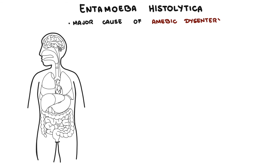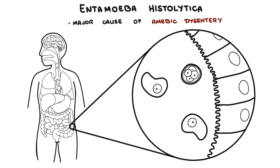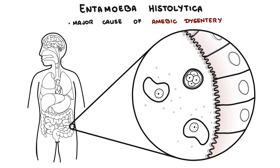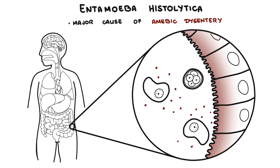An example of a pathogenic amoeba is Entamoeba histolytica, a major cause of amoebic dysentery and severe diarrhea worldwide. The cysts and trophozoites are ingested by humans from fecally contaminated food, water, or hands, or from fecal contact during sexual practices. They travel to the large intestine, where they can remain and cause diarrhea and colitis. They can also be excreted, or rarely, they can invade the bloodstream and travel to other organs such as the brain, liver, and lungs.